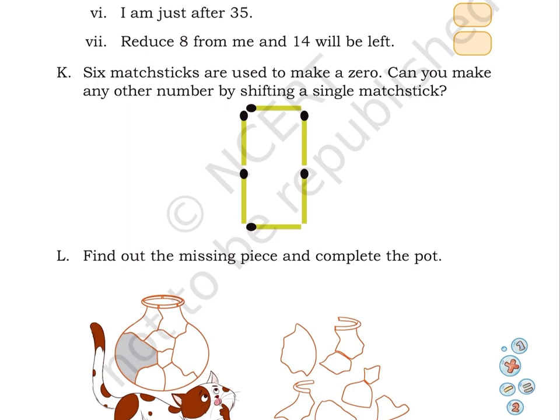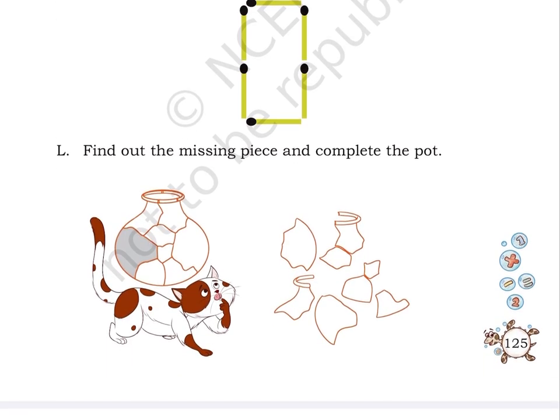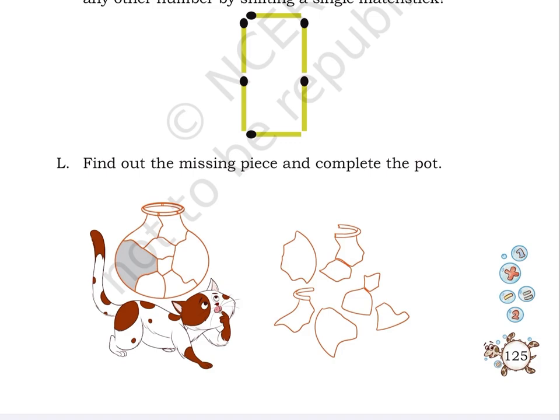Puzzle L: Find out the missing piece. Here on page number 125, there are two pictures given of a picture. One is of a cracked picture and second one is of a broken picture. A cat is looking at the broken picture. Now, you have to find the missing piece of the picture to complete the cracked picture.